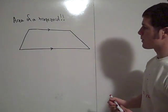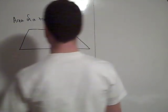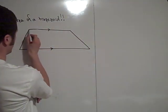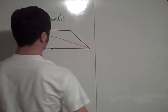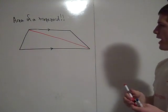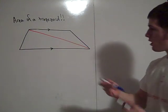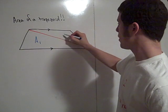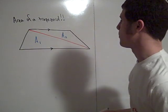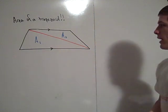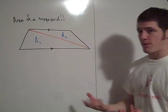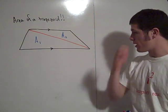Another way to do it is to split the trapezoid into two triangles by drawing this diagonal. Now we have two regions of area, area 1 and area 2. If you can find the area of area 1 and find the area of area 2 and add them together, then you get the area of the trapezoid.